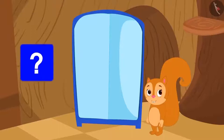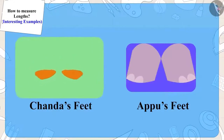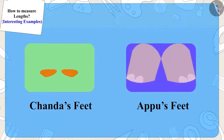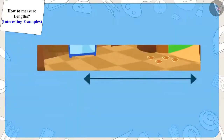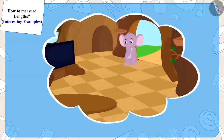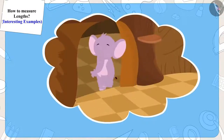Children, can you say why this happened? Chanda's feet are too small and Appu's feet are too big. This is the reason why the distance measured by Chanda's 10 steps and Appu's 10 steps are not the same. So when Appu walked 10 steps straight from the door, he reached the other room.